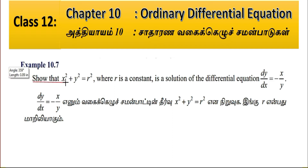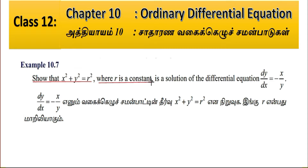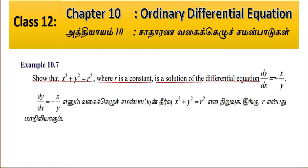Show that x squared plus y squared equals r squared, where r is a constant, is a solution of the differential equation dy by dx equal to minus x by y.